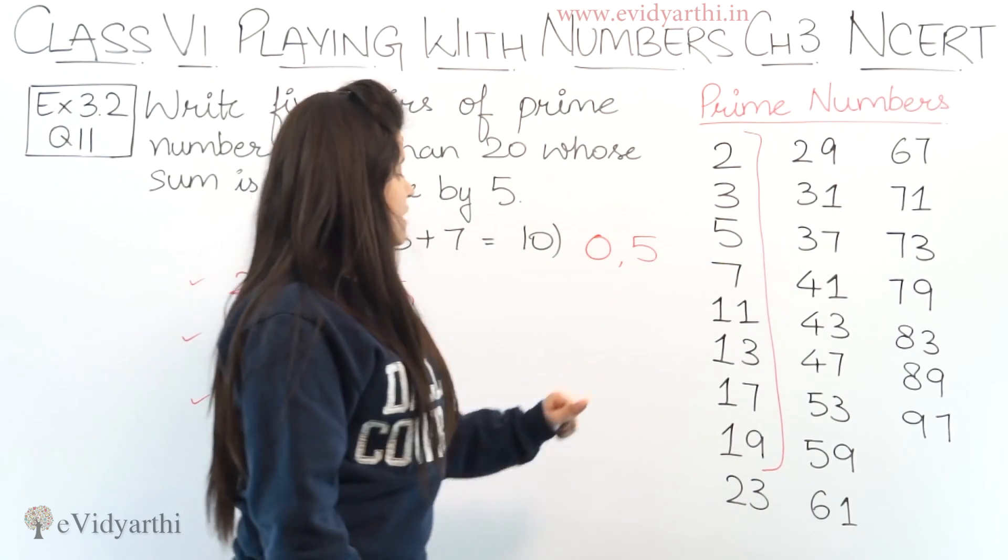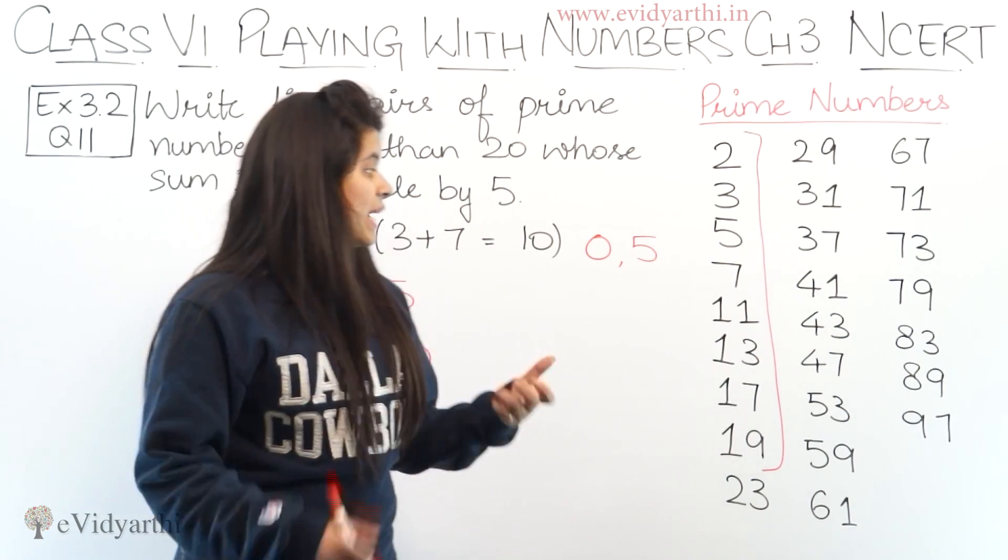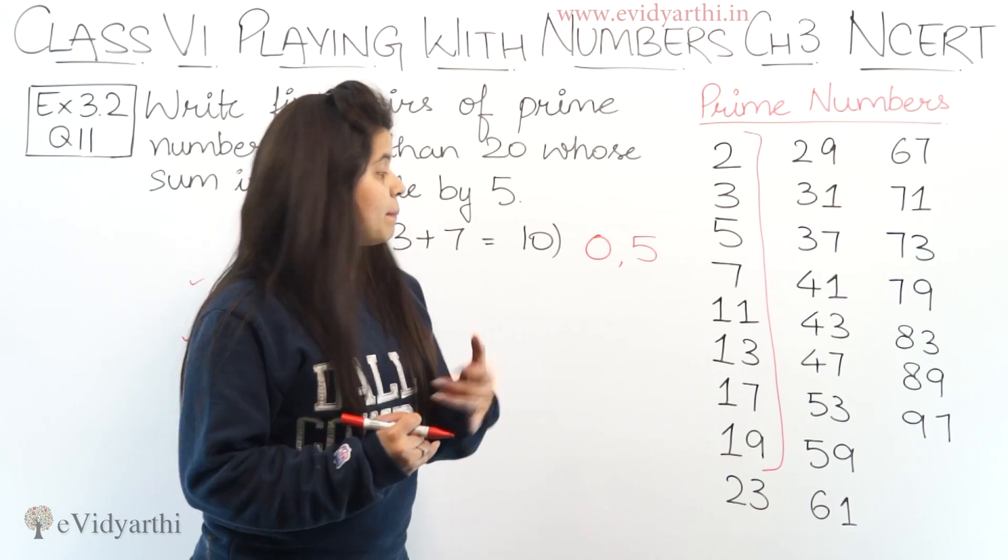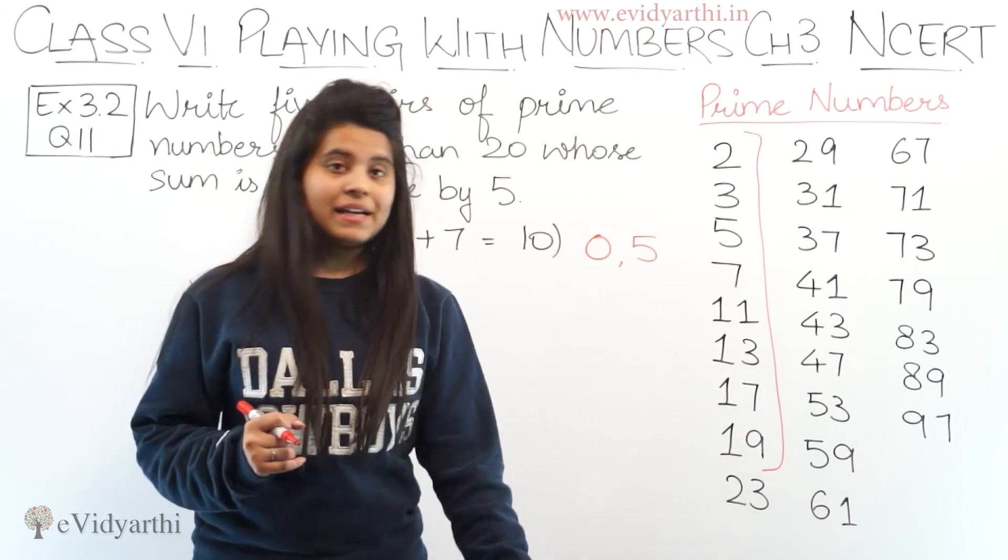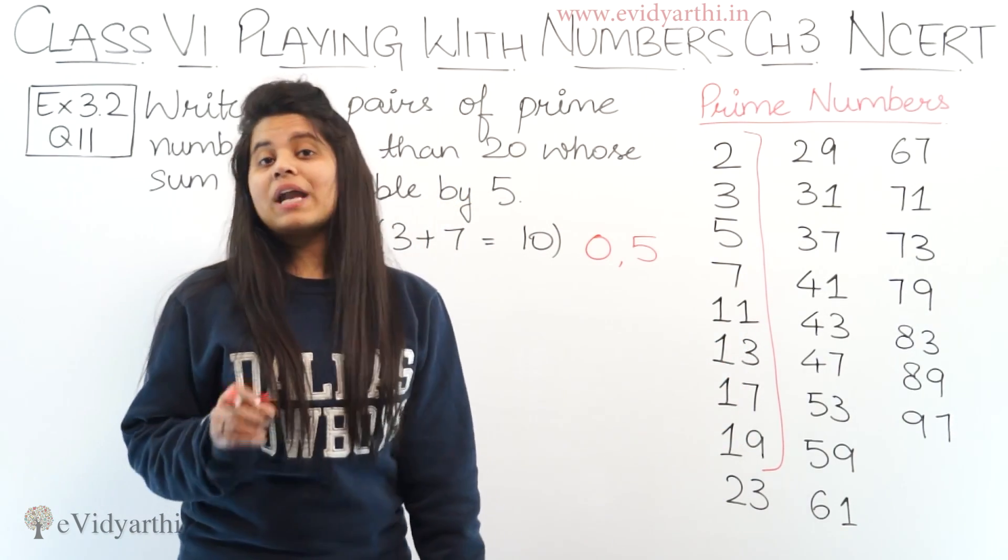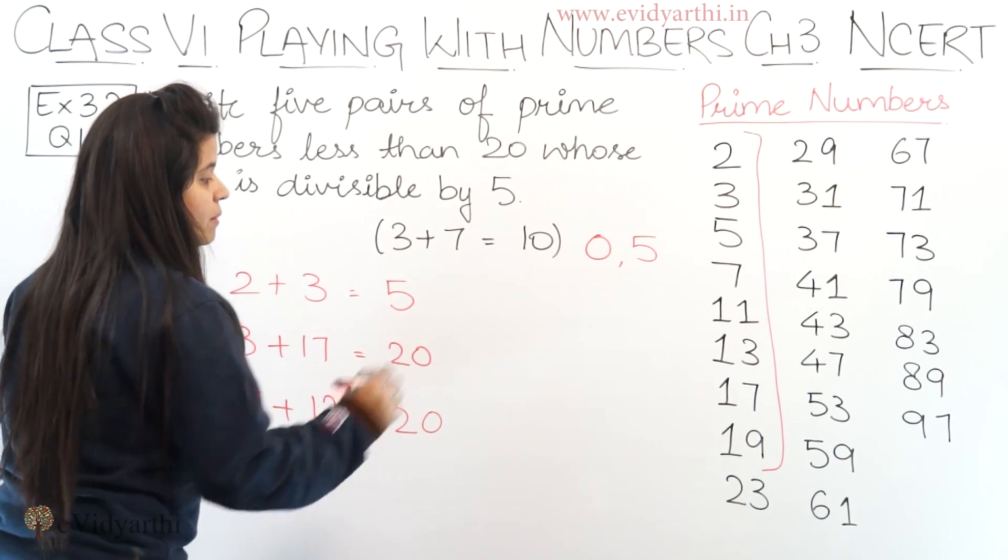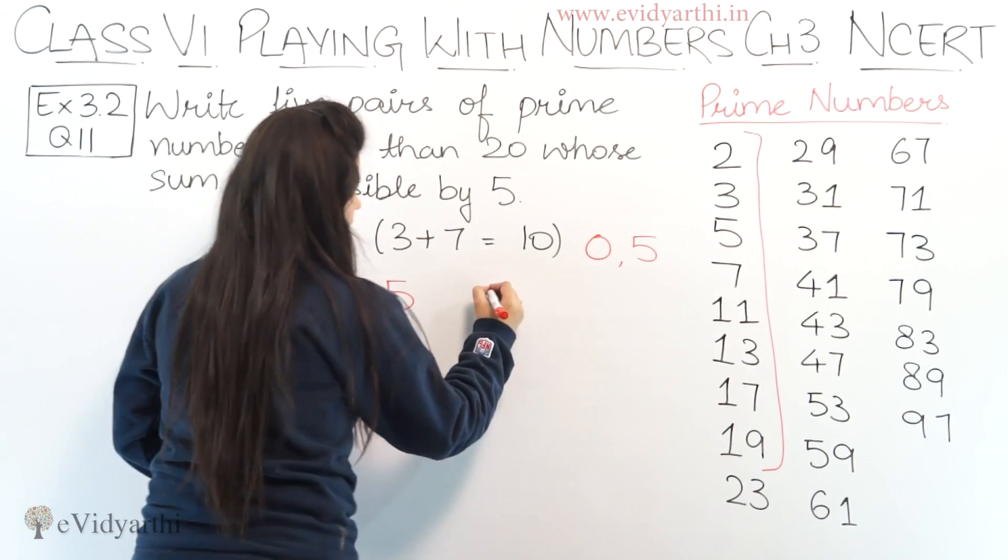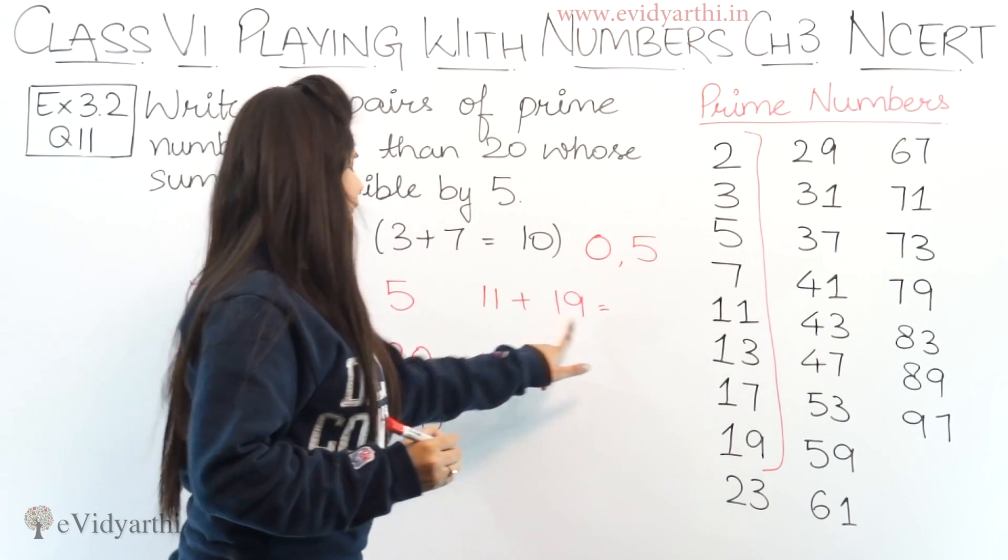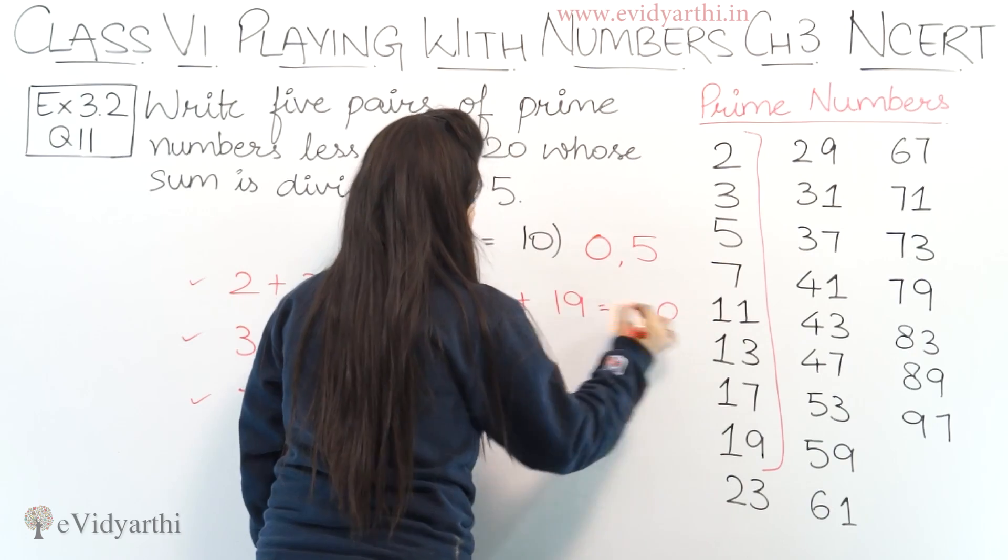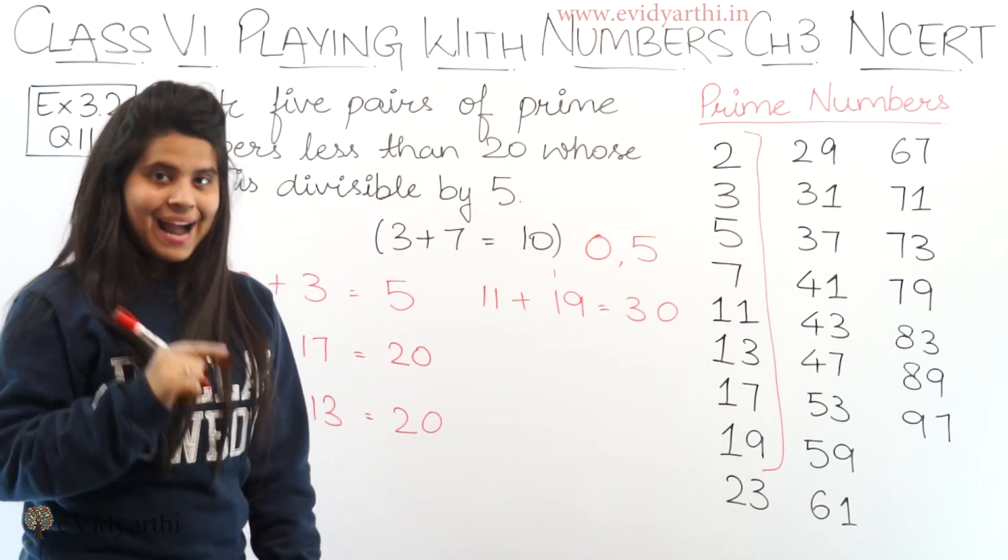Next let's move to the next one, we have 11. Now in 11 the last digit is 1. With 1 we can either add 4 to get 5 at the end, or we can add 9 with 1 to get 10 at the end, which will give me 0 at the end. So we can take 11 plus 19. Now 11 plus 19 equals: 9 plus 1 is 10. So this will be 1, 2, 3... Now 13... wait, 30 comes in the 5 times table.